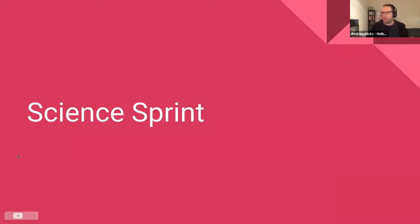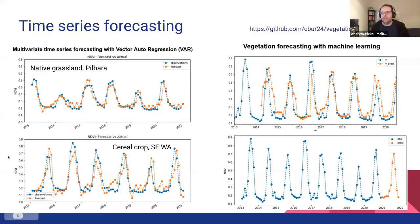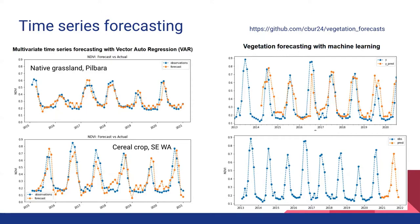Now we're going to move on to the science sprint. My sprint ended up just being me, but I investigated using satellite time series and other data sets to try and make short-term predictions about NDVI. I built two notebooks in the end — one built around machine learning and the other around vector autoregression, which uses multiple data sets to make predictions. Vector autoregression means that every variable is a linear function of the past values of itself and the past values of all other variables.